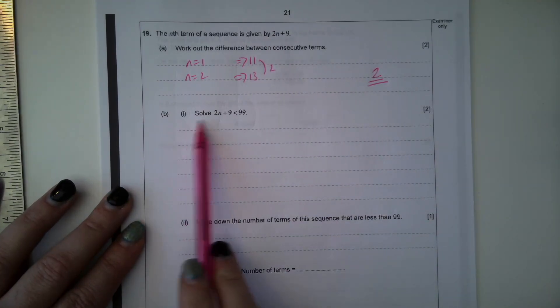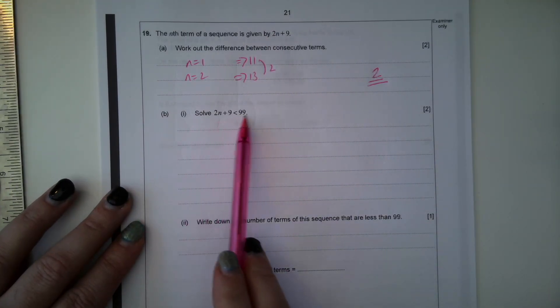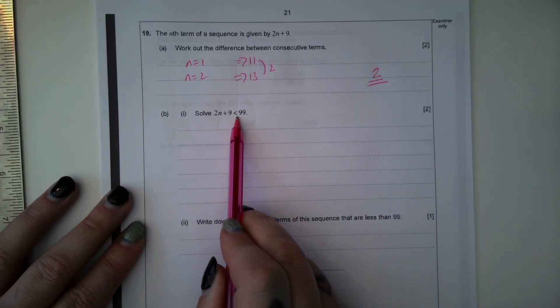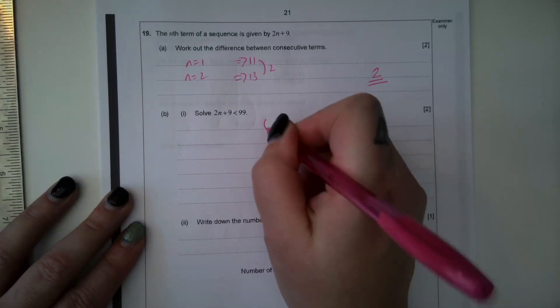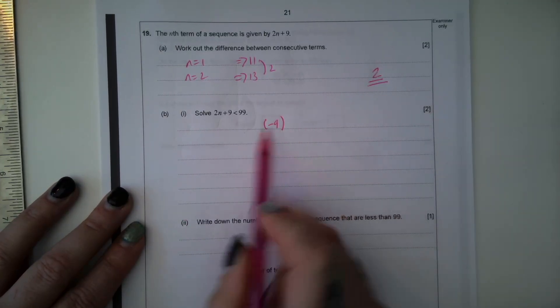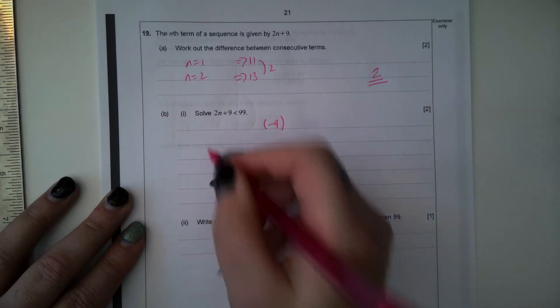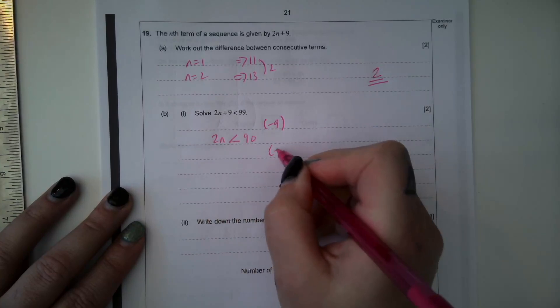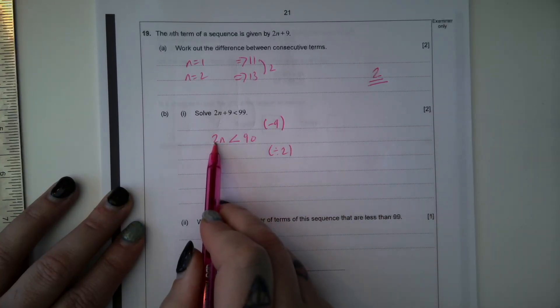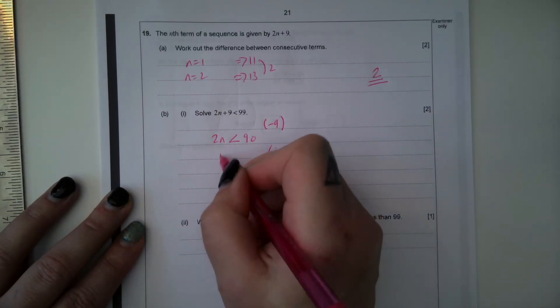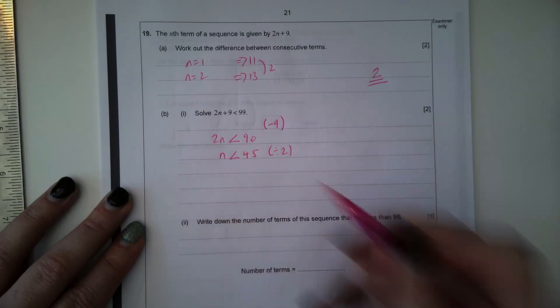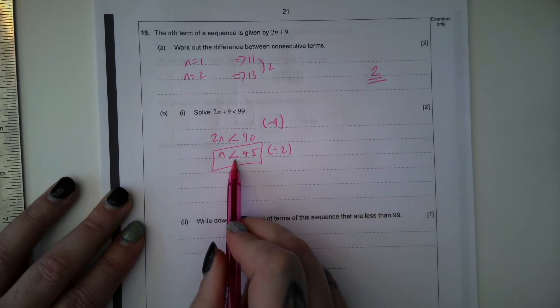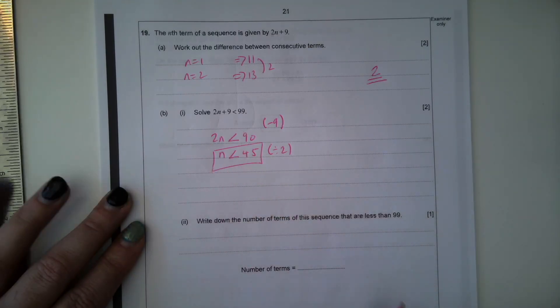Part B. Solve 2n add 9 is less than 99. So we're going to solve this just like an equation. But instead of an equal sign, we've got an inequality symbol. So I'm going to subtract 9 from both sides because it's the inverse of adding 9. So 2n is less than 90. And now I'm going to divide by 2 because it's the inverse of multiplying by 2. So n is less than 45. You have to make sure you keep that symbol there and you write it in this form for full marks.